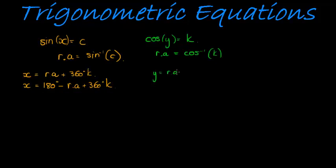Then y equals the reference angle plus 360 degrees times k1. The alternative solution is in the fourth quadrant, which is negative the reference angle plus 360 degrees times k1. I'll use k1 instead of k to avoid confusion.